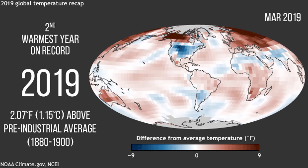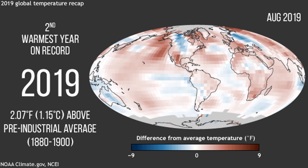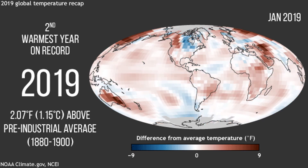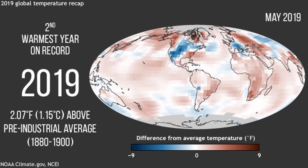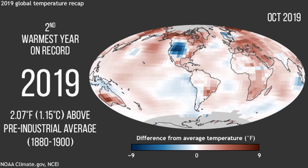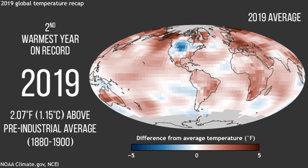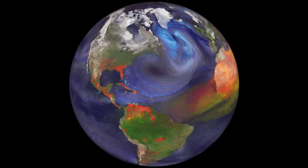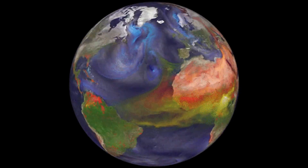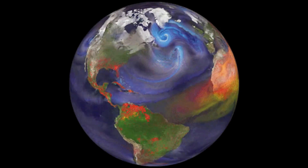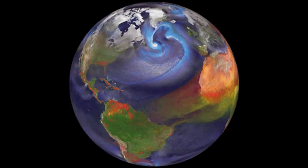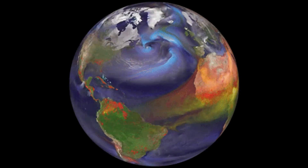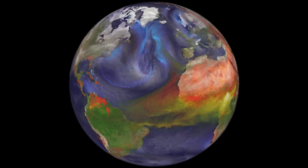Did you know that last year, 2019, it was recorded as the second warmest year by the National Oceanic and Atmospheric Administration of the United States? The global average temperature increased to 2.07 degrees Fahrenheit or 1.15 degrees Celsius, which is way above the pre-industrial global temperature average from the year 1880 to the 1900s. For most places, global warming will result in more frequent hot days and fewer cold days, with the greatest warming occurring over land. Longer, more intense heat waves will become more common. Storms, floods, and droughts will generally be more severe as precipitation patterns change. Hurricanes and typhoons may increase in intensity due to warmer ocean surface temperatures.